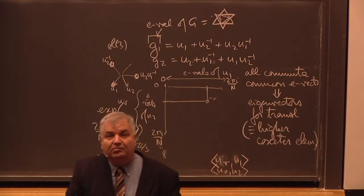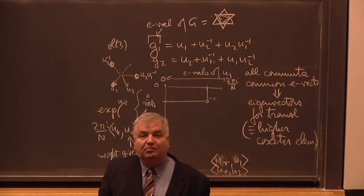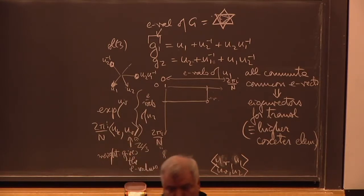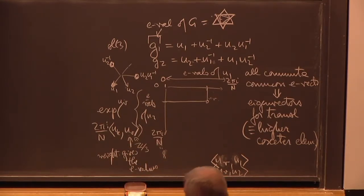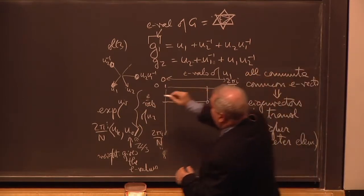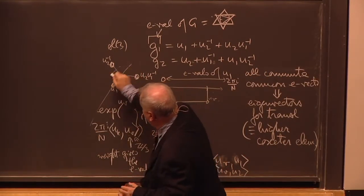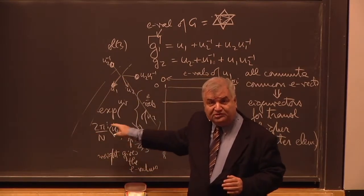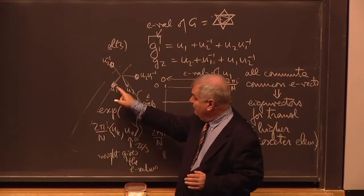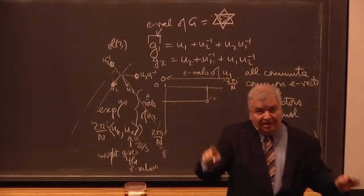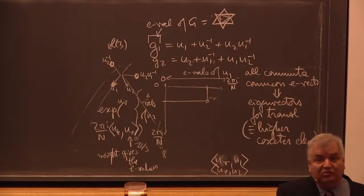U1, U2 essentially generate the functions of the complexified — the maximal torus. U1, U2 live on the torus, and they are translations exactly. Do you see — this is a torus here? The period here is exactly the length of the torus.